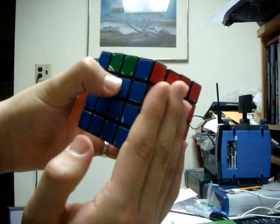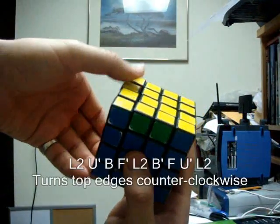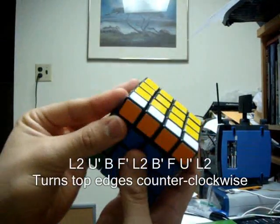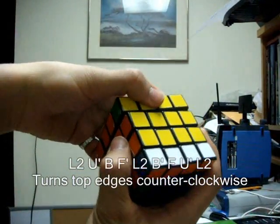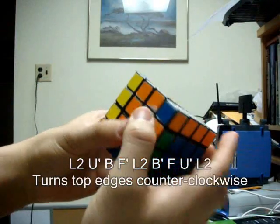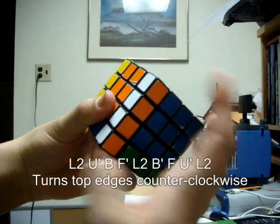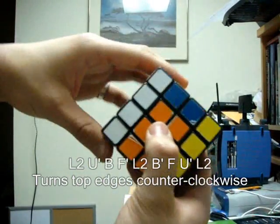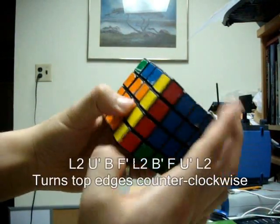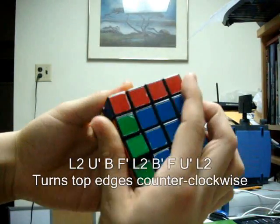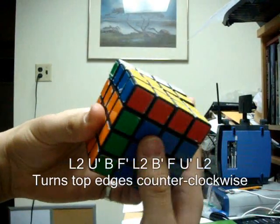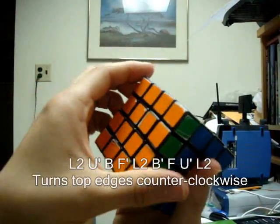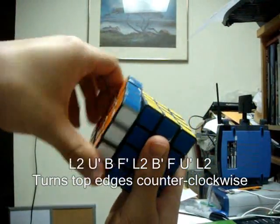So we hold that completed side on the right and we perform the Allen, which is left 180 degrees, top face counter clockwise, back face clockwise, front face counter clockwise, left face 180 degrees, back face counter clockwise, front face is going to go clockwise, then the top face is going to go counter clockwise and then the left face is going to go 180.